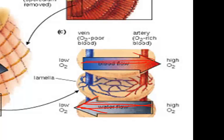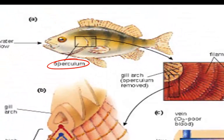The operculum is a movable flap that covers the gills and protects them; it also aids in pumping water into the mouth and over the gills. Some fish, like lungfish, can spend short periods of time out of the water because of a primitive lung. Some eels can even get oxygen through diffusion across their skin.